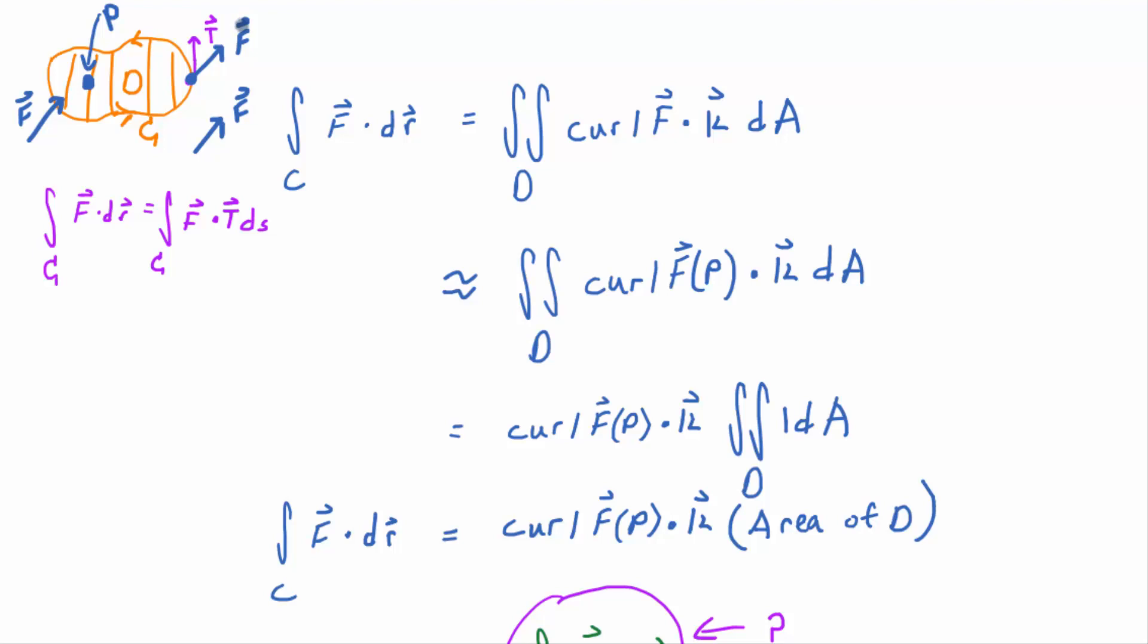When is, so the integral, the dot product of that integral has to do with the angle between these guys. We know that. When then is that dot product, that integral, going to be the largest? When F and T are pointing in the same direction. Would you buy that? So the bigger F dot T is, the more the vector field is pushing around that curve. The more the vector field is circulating around that curve. Would you buy that?